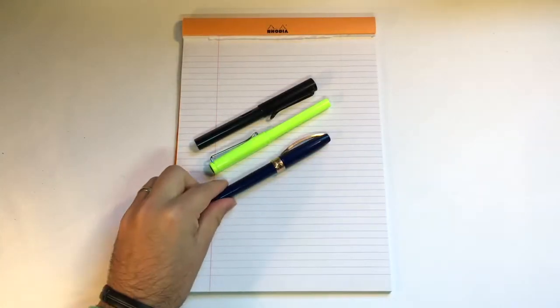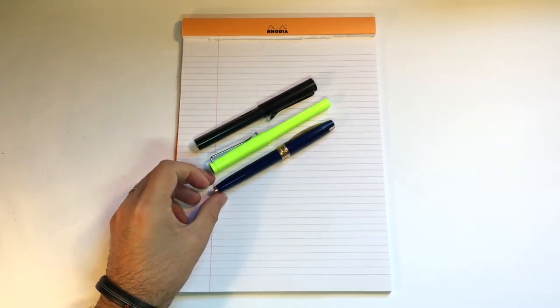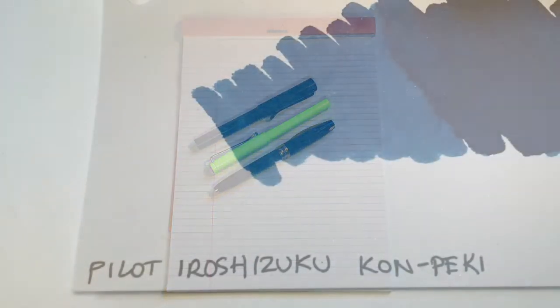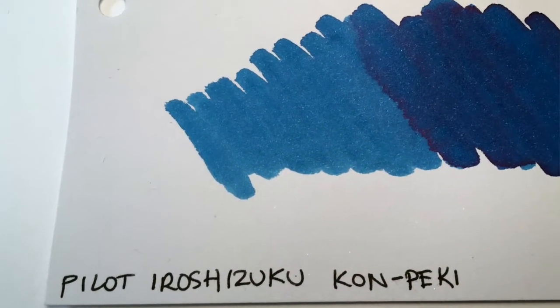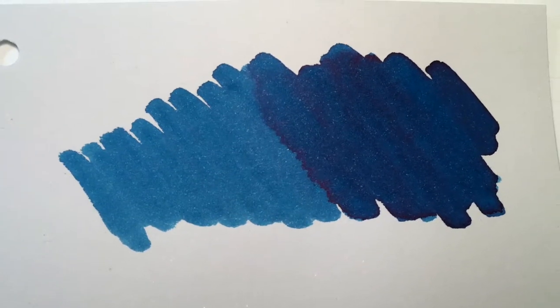Then we've got the Visconti Michelangelo with Iroshizuku Kon-peki. The combination of this pen and ink I think is just beautiful. It's a wet pen and a wet ink and you just get a lovely easy flow which is nice to use.